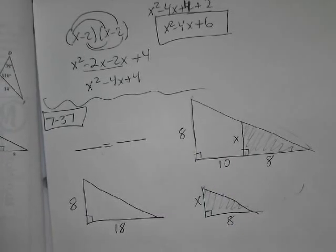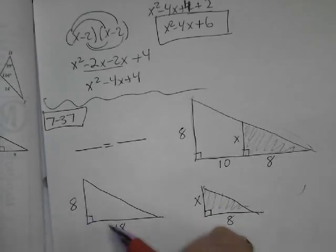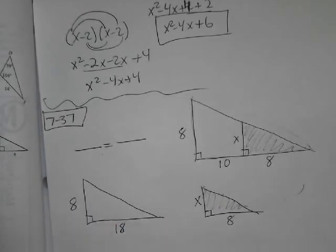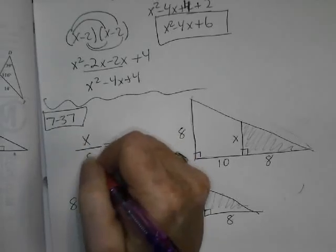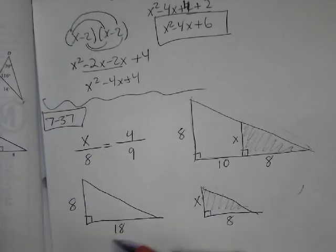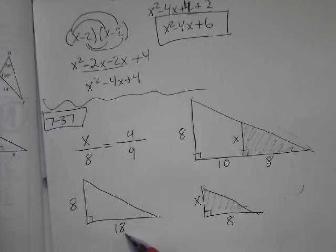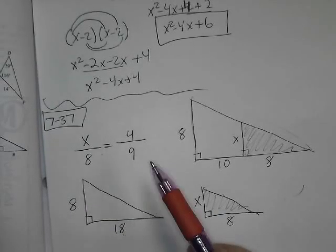So now we can do it. What's our proportion? What do you think, Cody? X over 8 equals 4 over 9. Oh, you want to reduce it? You can reduce it, sure. So he said x over 8 equals 4 over 9. I might have said x over 8 equals 8 over 18. But isn't 8 over 18, 4 over 9? Yeah. So that's okay. It reduces better. It makes it easier.